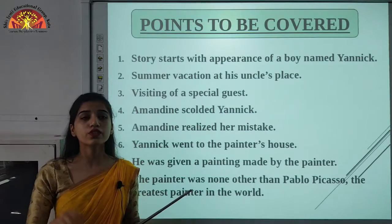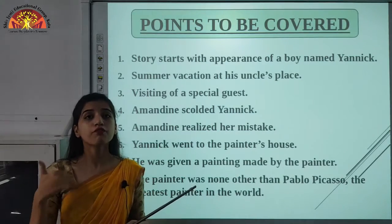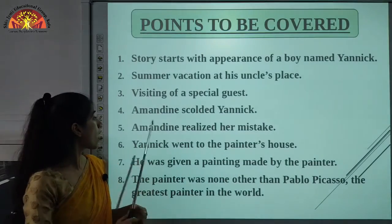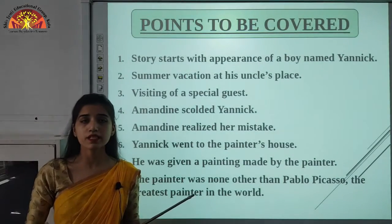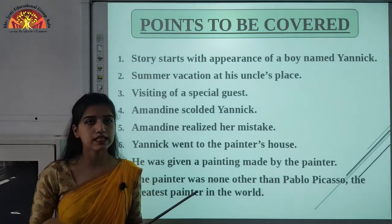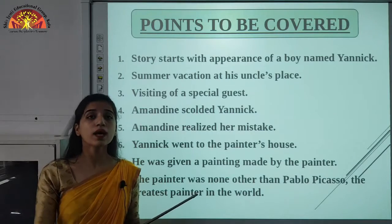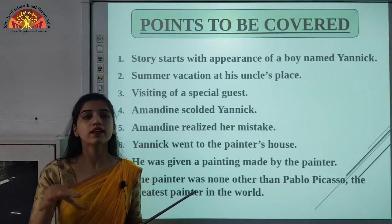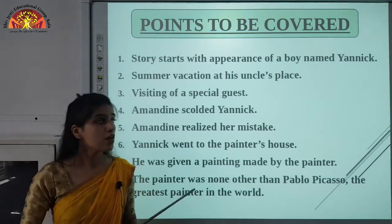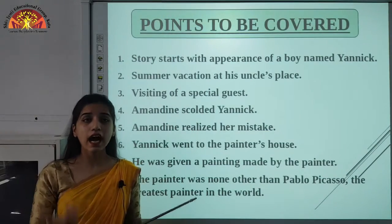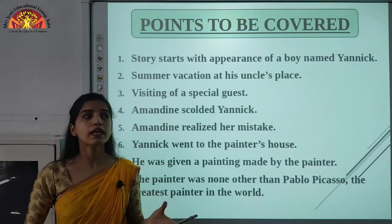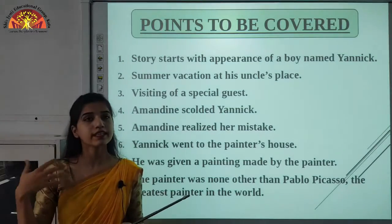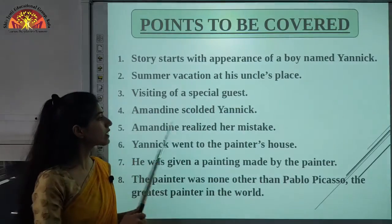Amandine shouted at Yannick, saying this was the tablecloth on which the famous painter had painted something in return for what he liked at their village inn. Everyone in the restaurant stopped eating and went silent, just staring at both of them. Then Uncle Bruno came and asked Amandine whether she had told Yannick about the tablecloth. She replied no, she had not told him. So she realized her mistake — Yannick had done it unknowingly — and she started crying.